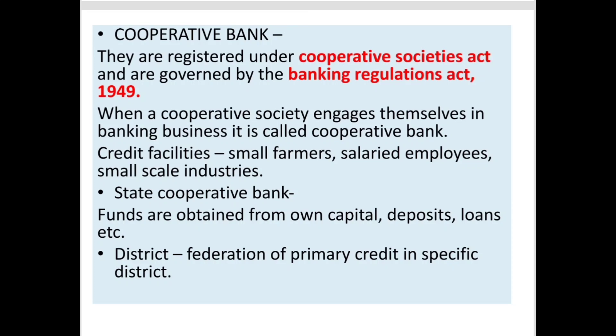Cooperative banks are registered under the Cooperative Societies Act. When cooperative societies start banking business, we call them cooperative banks. They provide credit facilities to small farmers, salaried employees, and small-scale industries. State cooperative banks operate at the state level with their own capital, deposits, and loans, whereas district cooperative banks operate at the district level.